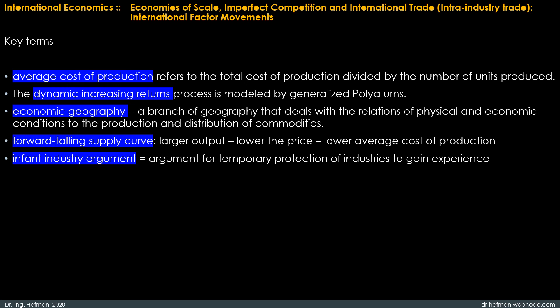Dynamic scale economies, like external economies at a point in time, potentially justify protectionism. Suppose that a country could have low enough costs to produce a good for export if it had more production experience, but that given the current lack of experience, the good cannot be produced competitively. Such a country might increase its long-term welfare either by encouraging production of the good through a subsidy or by protecting it from foreign competition until the industry can stand on its own feet. The argument for temporary protection of industries to enable them to gain experience is known as the infant industry argument. This argument has played an important role in debates over trade policy and economic development.